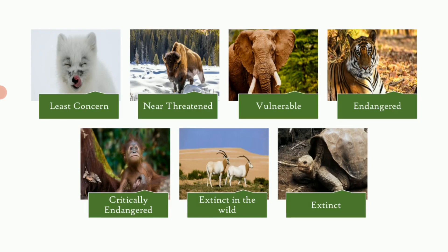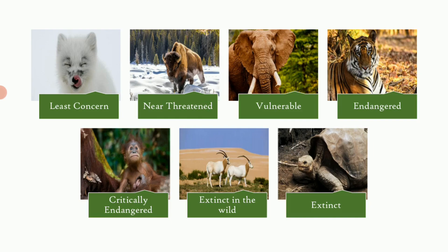The red list divides biodiversity across the world into nine categories — seven main ones plus two additional ones. These categories are based on several criteria. The first is the reduction in population size, measured over 10 years or three generations, whichever is longer. For example, a 30 to 50 percent reduction puts a species under the vulnerable category, while a reduction of more than 90 percent places it under critically endangered.